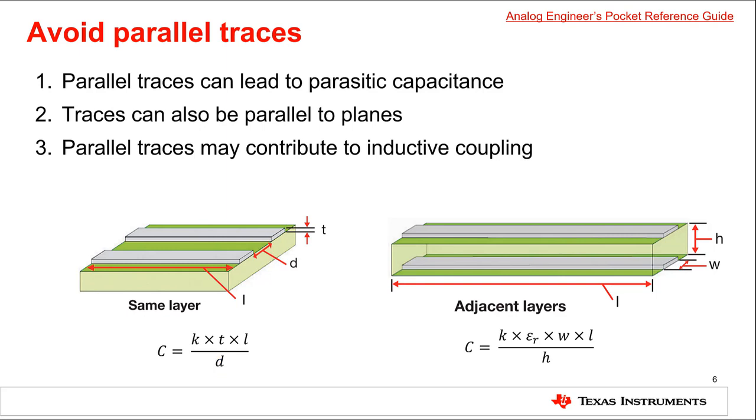Similarly, when two traces are on adjacent layers, they form a capacitance described by the formula C equals K epsilon sub R times WL over H, in which C is the total capacitance, K is the permittivity of free space, epsilon sub R is the dielectric constant of the insulating PCB material, often FR4, W and L are the width and length of the traces respectively, and H is the distance between the planes. These and other formulas on PCB parasitic effects can be found in the Analog Engineers pocket reference guide.